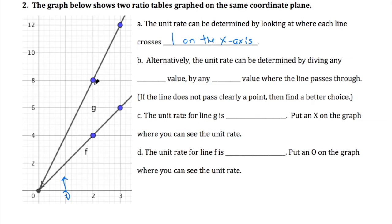Alternatively, you can also look at any point. So if we look at like this point for line G, this point has the ordered pair 2 comma 8. And the way we would find the unit rate from that information is we would take the y-value and divide by the x-value.